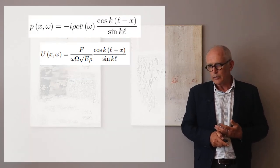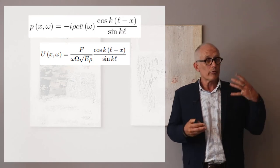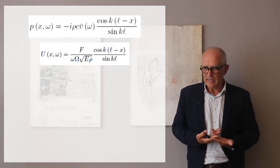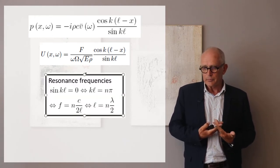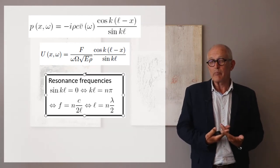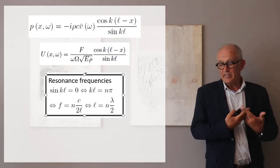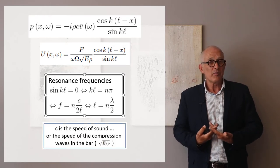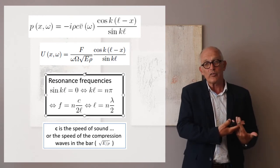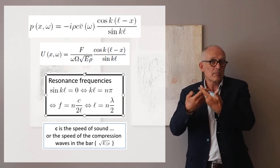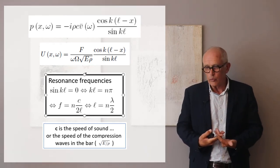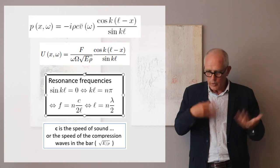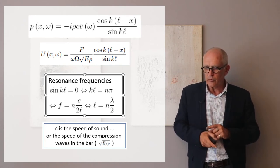These two solutions for the bar and for the tube share a common term: cosine K(L minus X) divided by sine KL. If we look at the denominator, sine KL can be zero for some frequency values. Indeed, sine KL equals zero when KL equals N times pi. This means sine KL will be zero either when the frequency is an integer number times c, the speed of sound, divided by twice the length of the tube, or when the length equals an integer number of half wavelengths. You can play with the numbers and formula to see that it works.